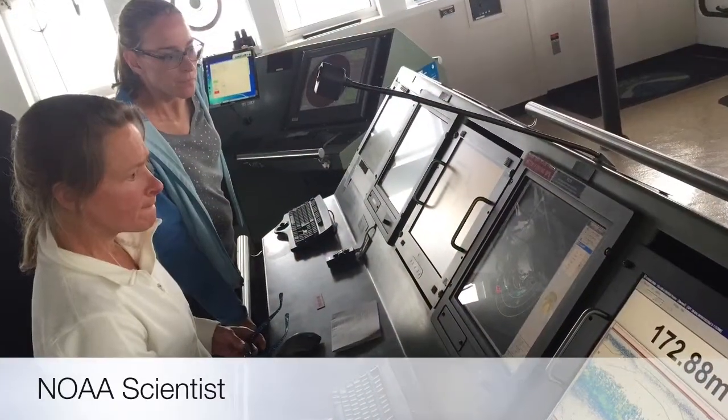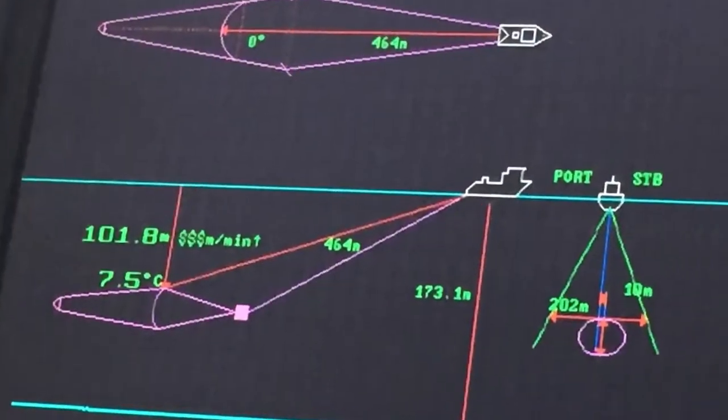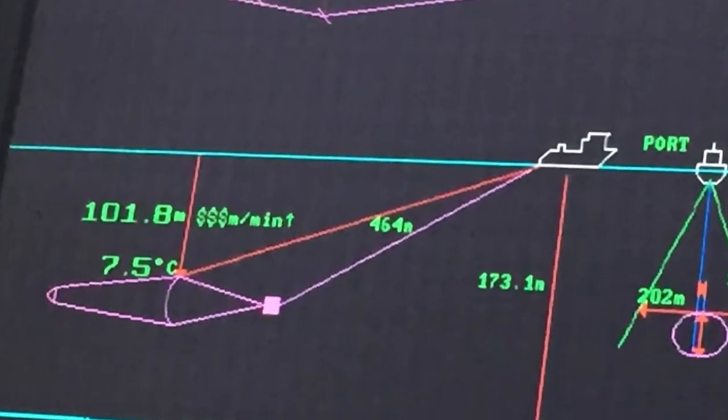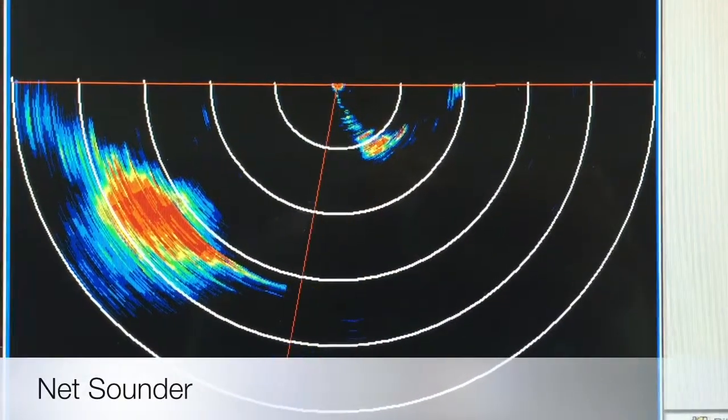While the net is deployed, the NOAA scientists monitor the situation from the bridge. There are computer screens that show the movement and location of the net. The net sounder shows the opening of the net and anything entering it.